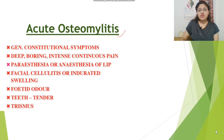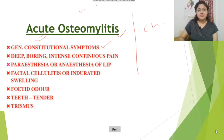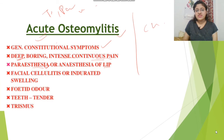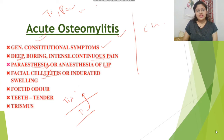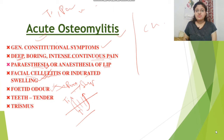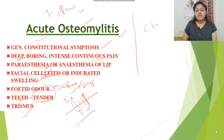Acute osteomyelitis features: general constitutional symptoms include temperature, deep intense continuous pain, paresthesia of the lip, and facial cellulitis — because the bone infection affects subcutaneous tissues leading to cellulitis. There is also indurated swelling, fetid odour due to pus, and in the mandibular area the teeth show tenderness and pain. Trismus — difficulty in mouth opening — is also present.